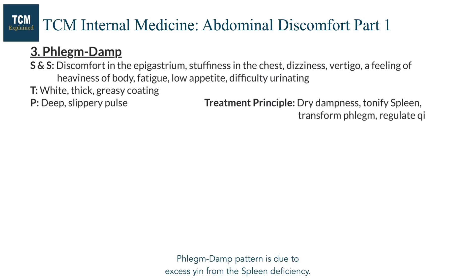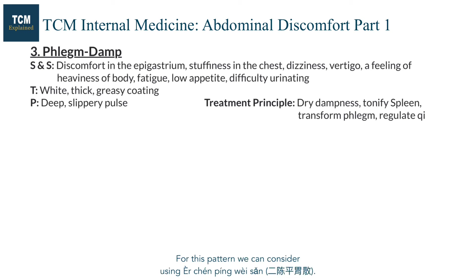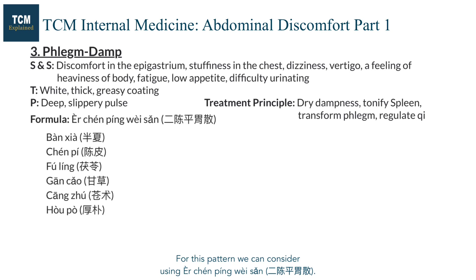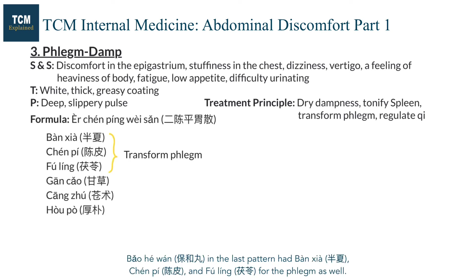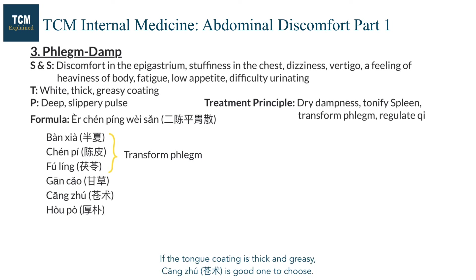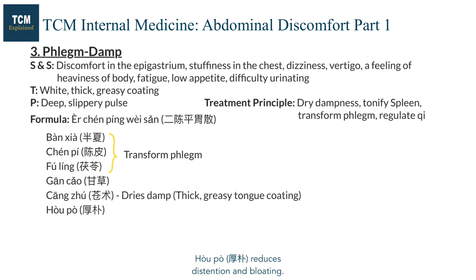Phlegm damp pattern is due to excess yin from the spleen deficiency. The spleen fails to transform and transport fluids, causing these signs and symptoms. For this pattern, we can consider using pingwei san formula. Bao hewan in the last pattern had banxia, chanpi, and fuling for the phlegm as well. If the tongue coating is thick and greasy, cangzhu is a good one to choose. Houpo reduces distention and bloating.